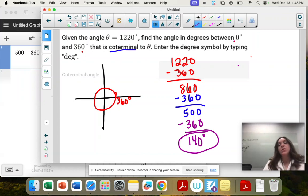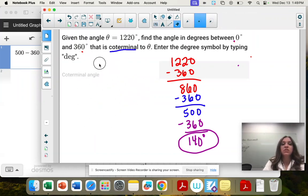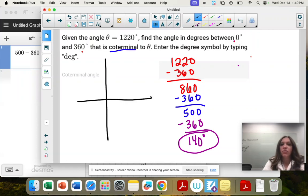So what happens is, I'm just going to start this over. My angle at 140 would be—here's 90, here's 180—so this would be 140.